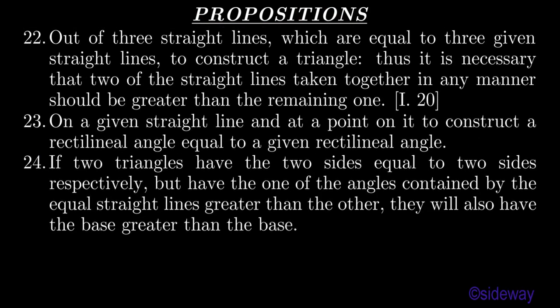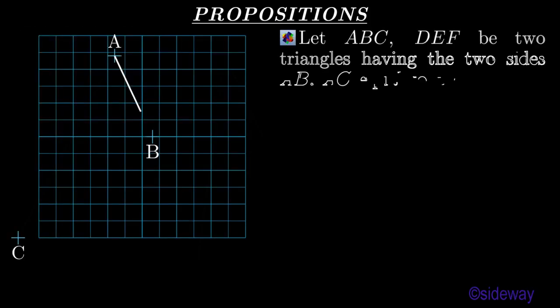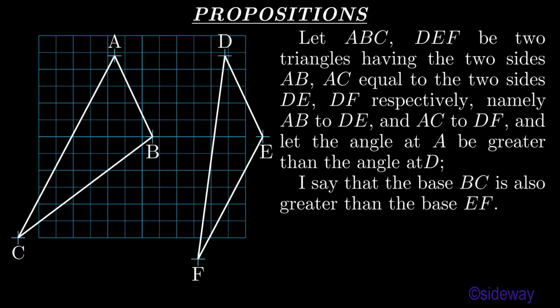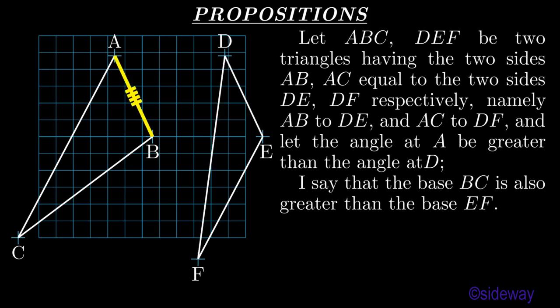Proposition 24. If two triangles have the two sides equal to two sides respectively, but have one of the angles contained by the equal straight lines greater than the other, they will also have the base greater than the base. Let ABC, DEF be two triangles having the two sides AB, AC equal to the two sides DE, DF respectively, namely AB to DE and AC to DF, and let the angle at A be greater than the angle at D.